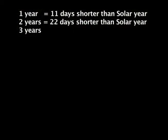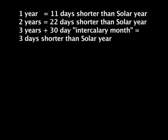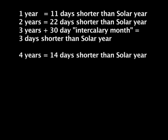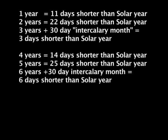So what you do is this: you add a month, and you wind up three days short. So you're back close to the solar cycle. Then you have another year — by this time you're 14 days short. Then another one, 25 days short. You add a month in the sixth year, and you're only six days short.